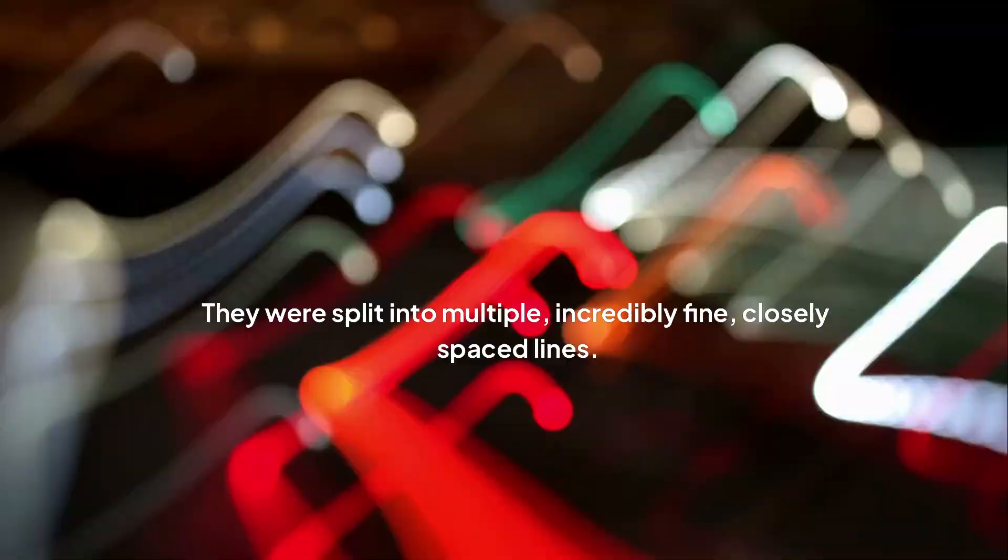The bright lines in the spectrum weren't single lines at all. They were split into multiple, incredibly fine, closely spaced lines. It was a tiny error in the theory, a fine structure that hinted at something deeper going on.